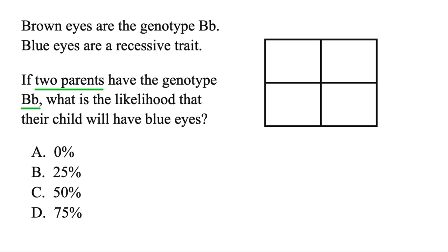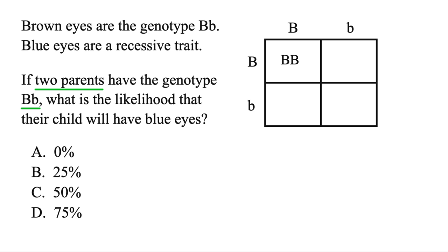To find this out, just go ahead and draw a square with four little parts to it. Then you want to grab the parents. Now they're both Big B, Little B. You're going to put one along the side here and one across the top there. Then you're going to split up the letters. Next you're going to find out what the kids look like — they're just going to be the combinations of the letters on the inside. So that one's Big B, Big B.